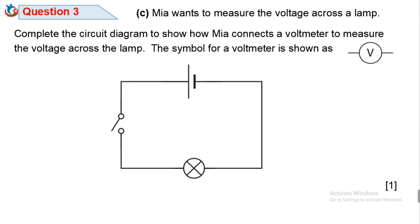Question 3c. Mia wants to measure the voltage across a lamp. Complete the circuit diagram to show how Mia connects a voltmeter to measure the voltage across the lamp. The symbol for a voltmeter is shown as this symbol. Now to make it easier for us, let's quickly name the components in the circuit. We have the power source as well as key or switch and finally the lamp. Since Mia connects a voltmeter to measure the voltage across the lamp, now that we know the position of the lamp, all you need to do is to draw the voltmeter and connect it over the lamp like this.